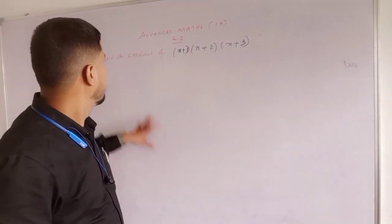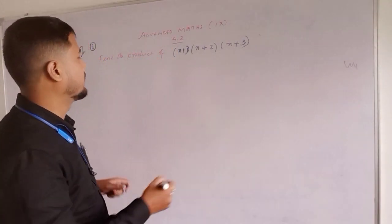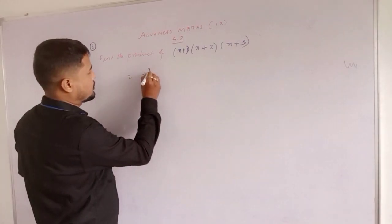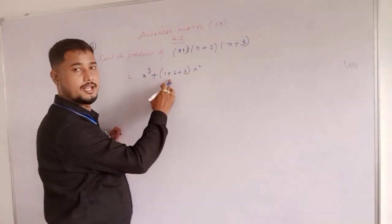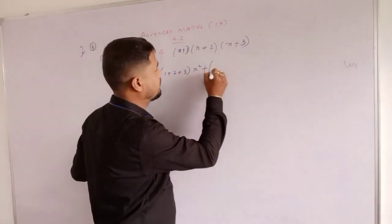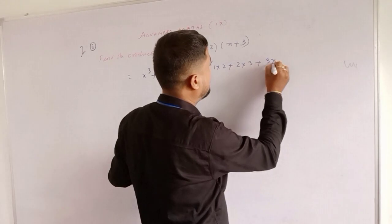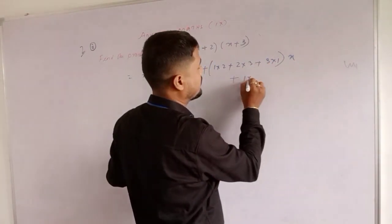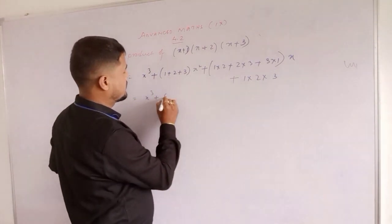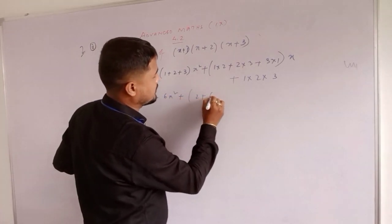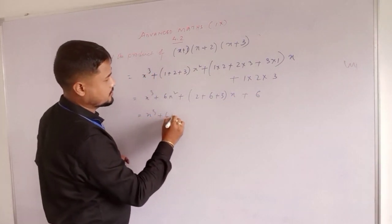Next question. Find the product of x plus 1 into x plus 2 into x plus 3. We can write x cube plus 1 plus 2 plus 3 into x square, plus 1 into 2 plus 2 into 3 plus 3 into 1 into x, plus 1 into 2 into 3. Then x cube plus 6x squared plus 2 plus 6 plus 3 into x plus 6, giving x cube plus 6x squared plus 11x plus 6. That is question number 2.